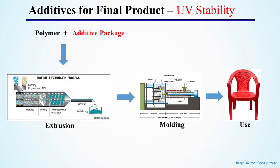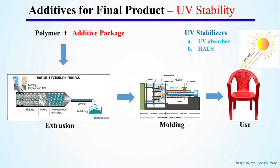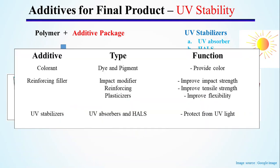Now coming back to the properties of the final product. Many plastic products are used outdoors under sunlight, which contains high-energy UV radiation that can break the polymer chain, lower its strength, and deteriorate appearance. To protect the product from the harmful effects of UV light, UV stabilizers are added. There are two types: UV absorbers, which preferably absorb UV radiation, and HALs (HALS), which quench free radicals and provide indirect protection. Depending on the performance requirements and environmental conditions, different additives are added.